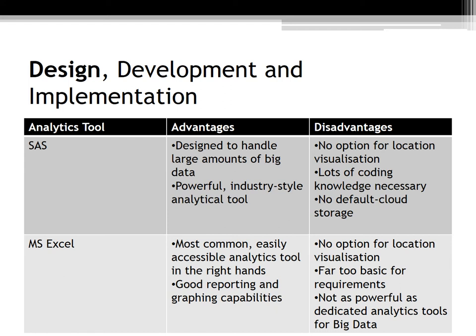Lastly, Microsoft Excel — the most obvious advantage is that it is the most common and easily accessible analytics tool, depending on whether you can use it effectively. It is good at reporting and graphic capabilities, but it only goes as far as good. There is no option for location visualisation, and the requirements of this study are simply far too advanced for Excel. It is not as powerful as a dedicated analytics tool for big data, meaning that IBM Watson Analytics is by far the best choice due to its ease of use, accessibility from anywhere, and no requirement for coding knowledge.